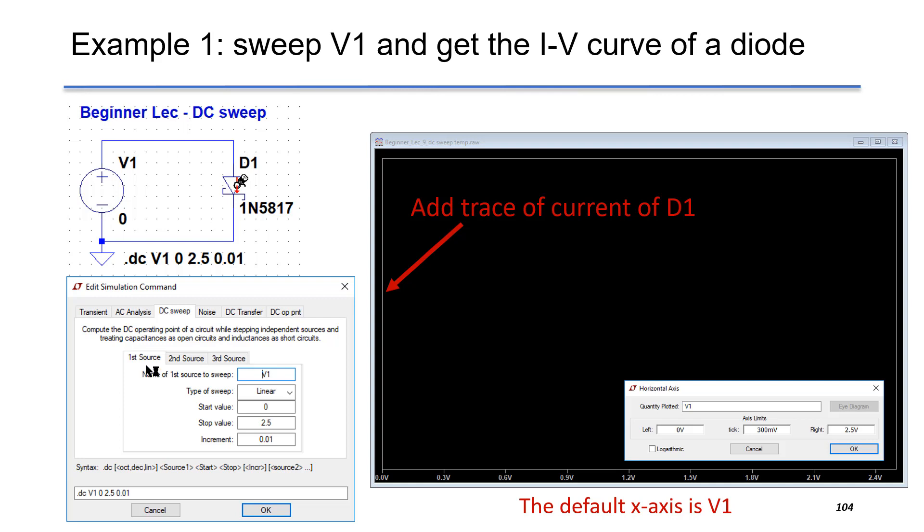So you can choose the first source using V1, and the type of sweep is linear. The start value is 0V, the stop value is 2.5V, the increment is 0.01V.